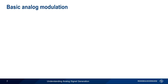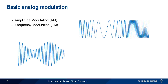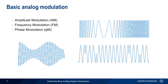In addition to CW signals, an analog signal generator can also generate signals with analog modulation. The three basic types of analog modulation are amplitude modulation, frequency modulation, and phase modulation. These should all be at least somewhat familiar to you, but if you'd like more information, please watch separate presentations on each of these modulation types.